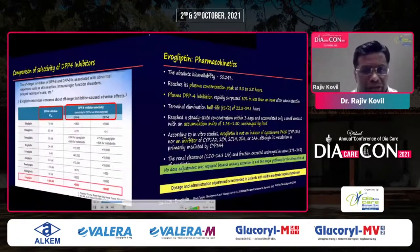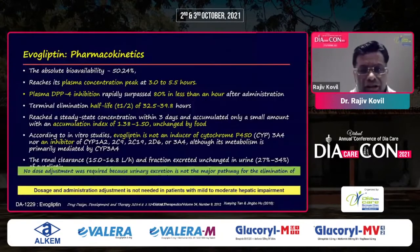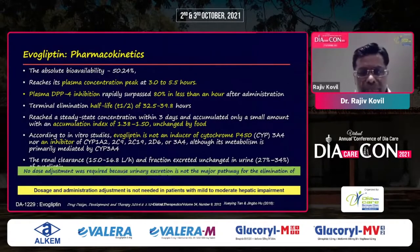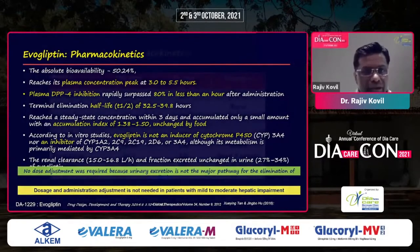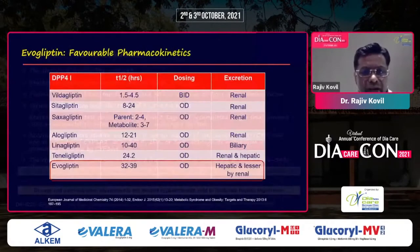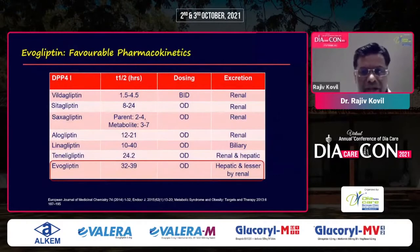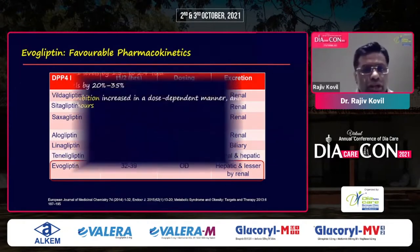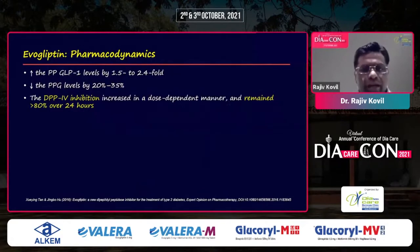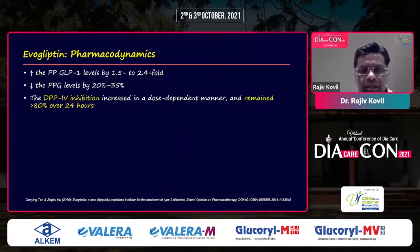Looking at the pharmacokinetics: bioavailability is good, peaks at 3 to 5 hours, 80% DPP4 inhibition, and half-life is 32 hours. No dosage adjustment is required because urinary excretion is not the major pathway for elimination. No dosage adjustment is needed in patients with mild to moderate hepatic impairment. It increases GLP-1 by 1.5 to 2.5 fold, reduces postprandial glucose levels by 20 to 35 percent, and DPP4 inhibition remains above 80 percent over 24 hours.